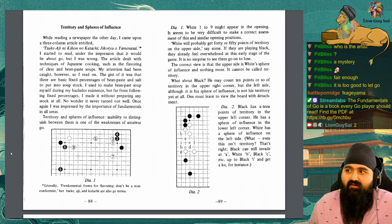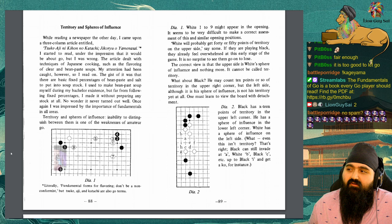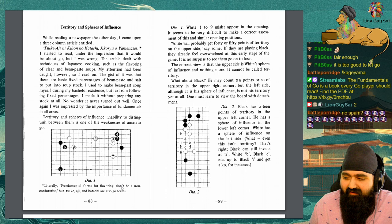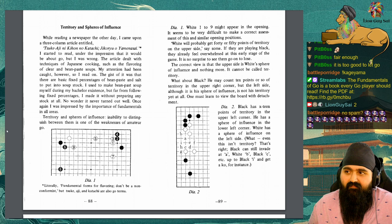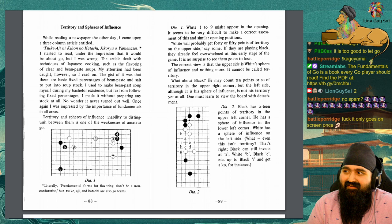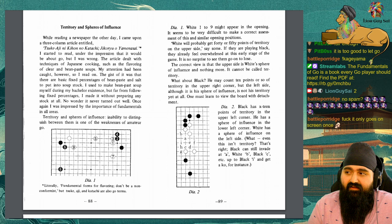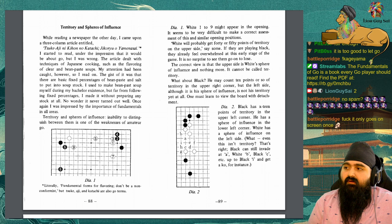While reading a newspaper the other day, I came upon a three-column article entitled fundamental forms of flavoring: don't be a non-conformist. But tsuke, aji, and katachi are also go terms. I started to read under the impression that it would be about go, but I was wrong.